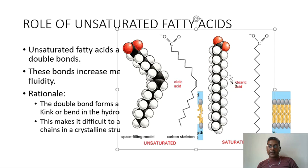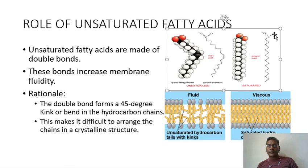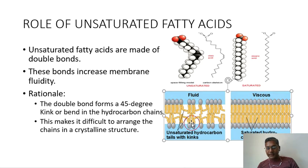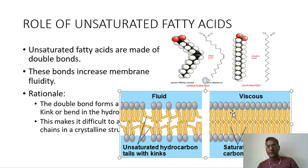This molecule is not straight like stearic acid, where there are no double bonds — that is, saturated fatty acids — and the chain is linear. The double bond forms a 45-degree kink or bend in the hydrocarbon chain, making it difficult to arrange tightly. Because of the kink, there is a space formed, and that space actually makes the membrane more fluid. If there is no space — unlike stearic acid — the membrane becomes more viscous and the molecules are compactly placed. The fluidity is provided by these double bonds in the unsaturated fatty acids.